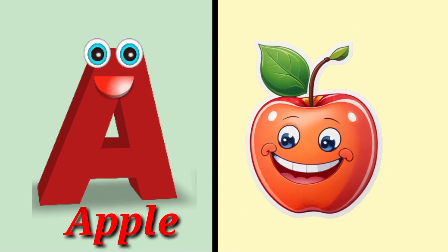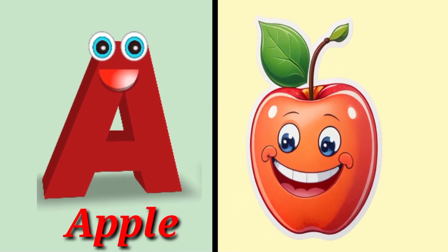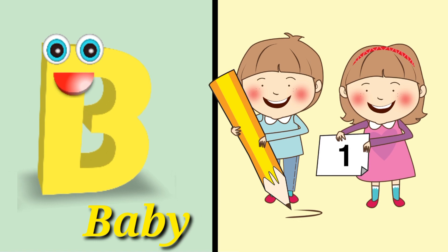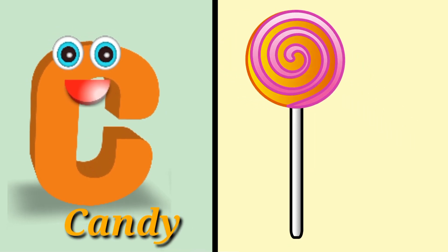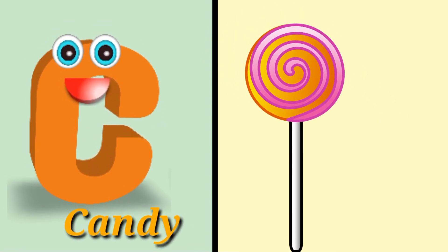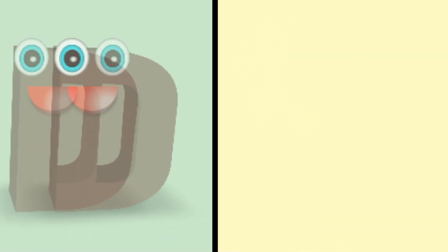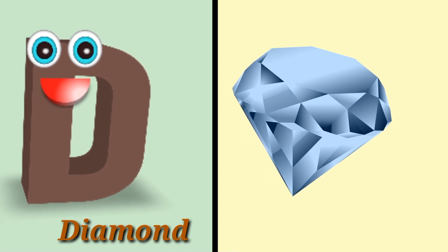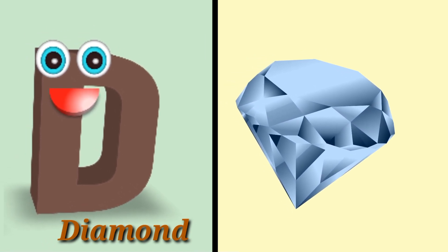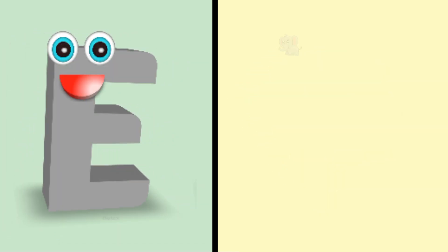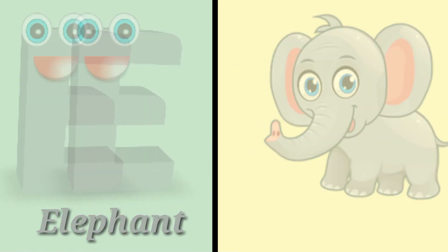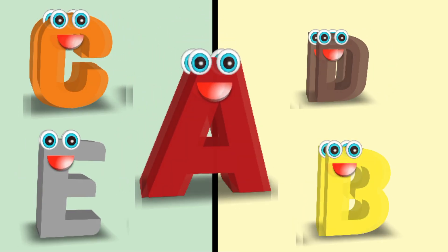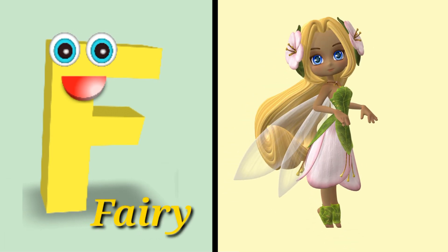A is for apple. B is for baby. C is for candy. D is for diamond. E is for elephant. F is for fairy.